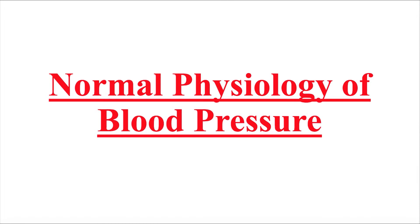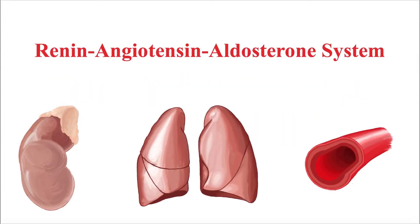Now that the risk factors have been discussed, Megan explains the normal physiology of blood pressure regulation. There are several mechanisms that regulate blood pressure. One primary mechanism is the renin-angiotensin-aldosterone system. Other mechanisms include baroreceptors, chemoreceptors, and vasopressin, otherwise known as antidiuretic hormone.